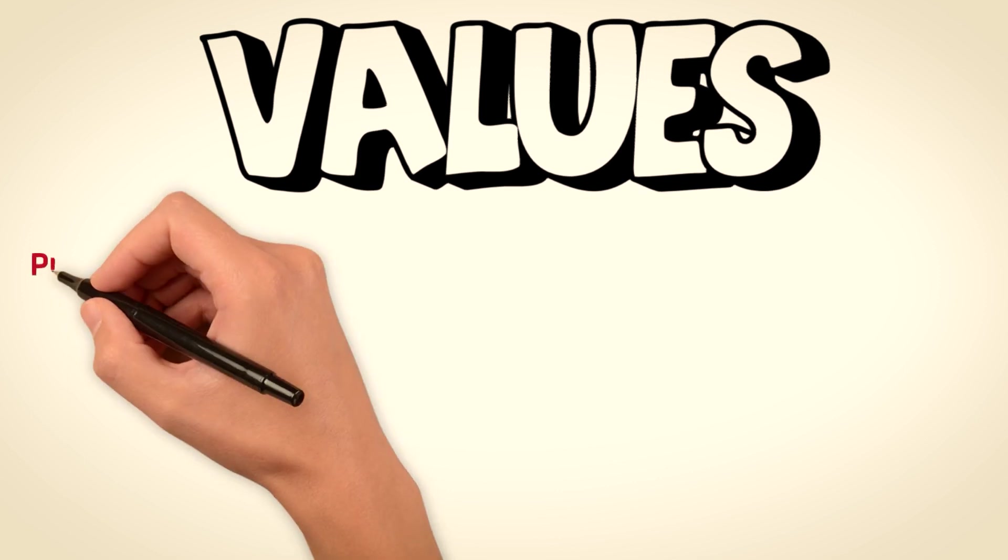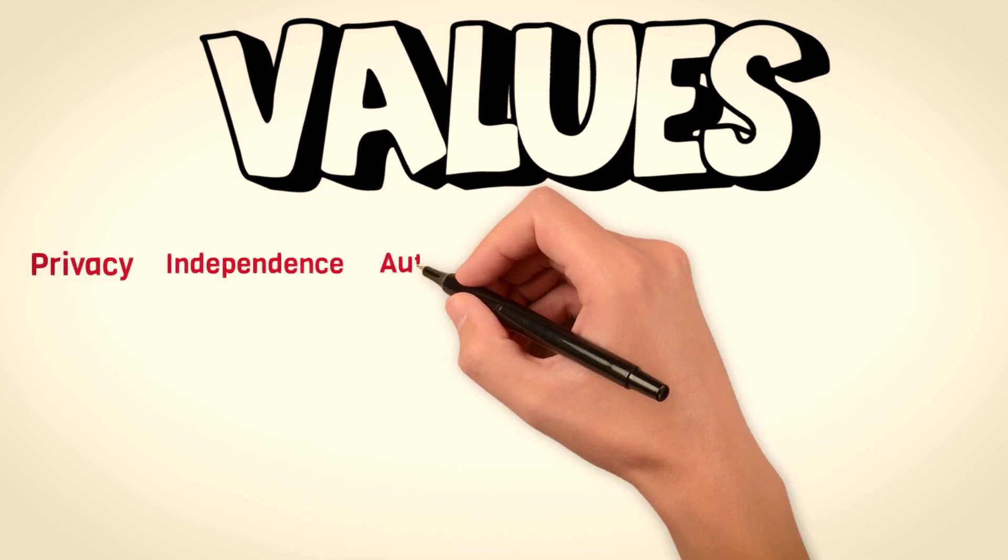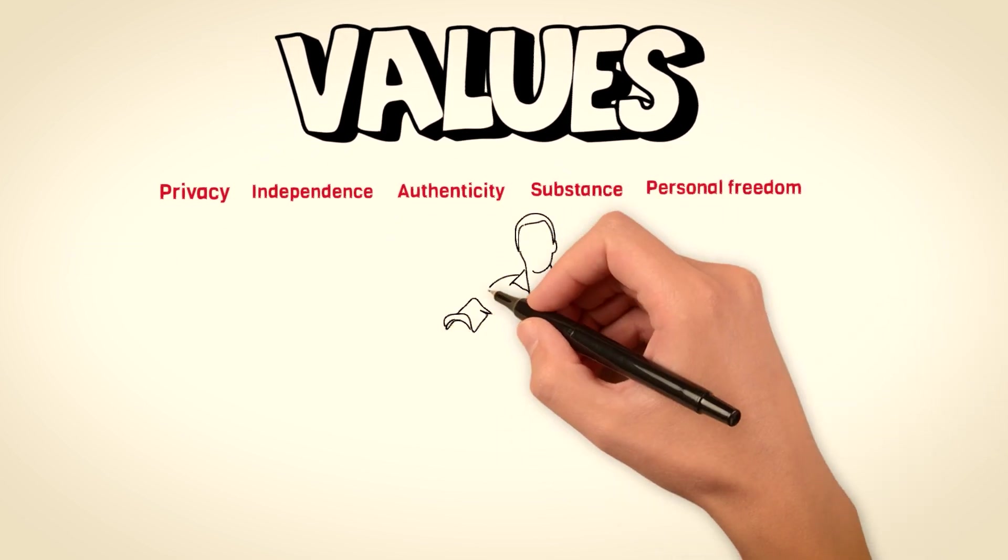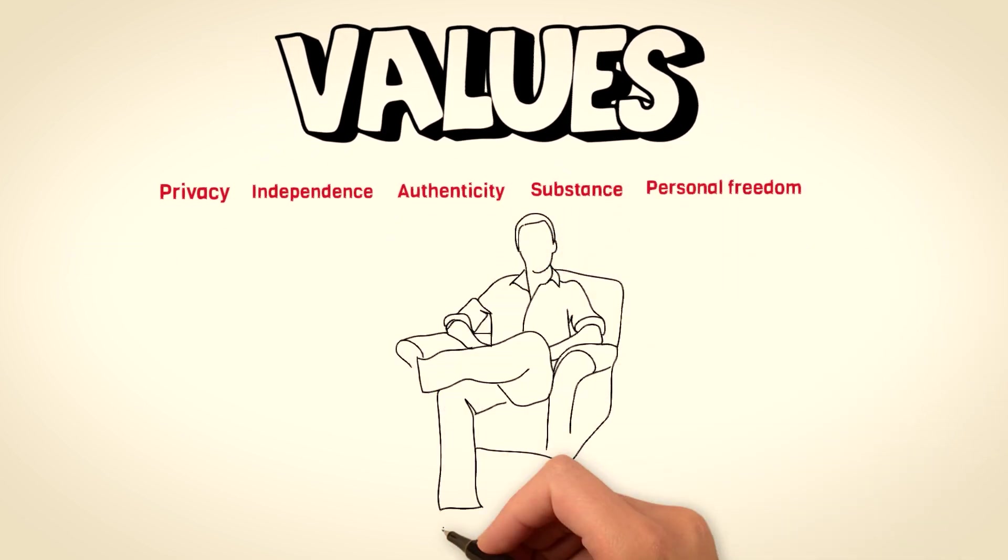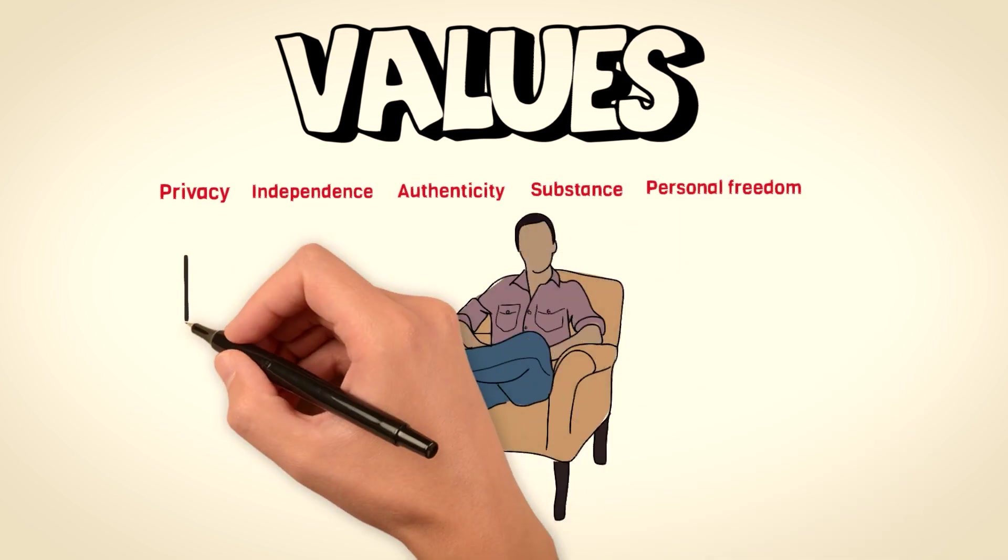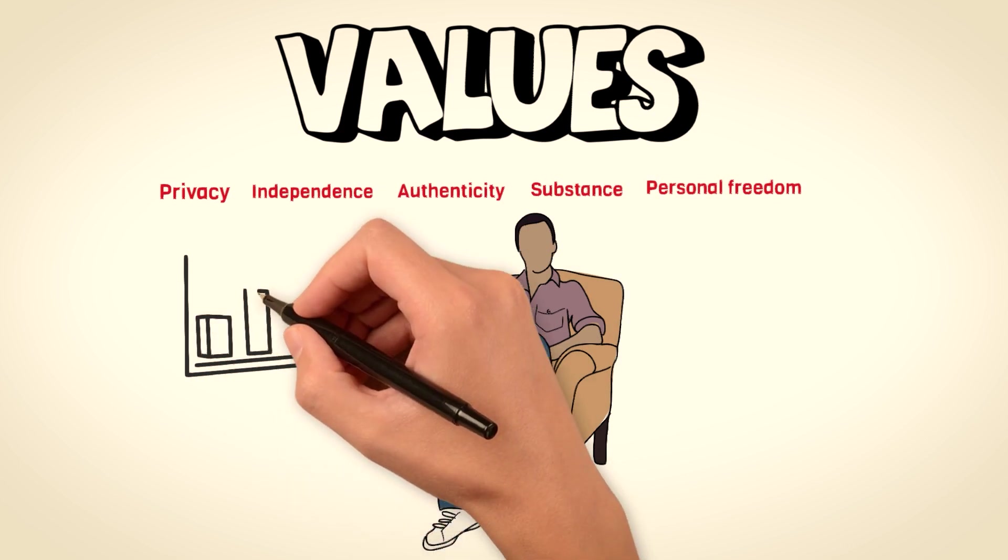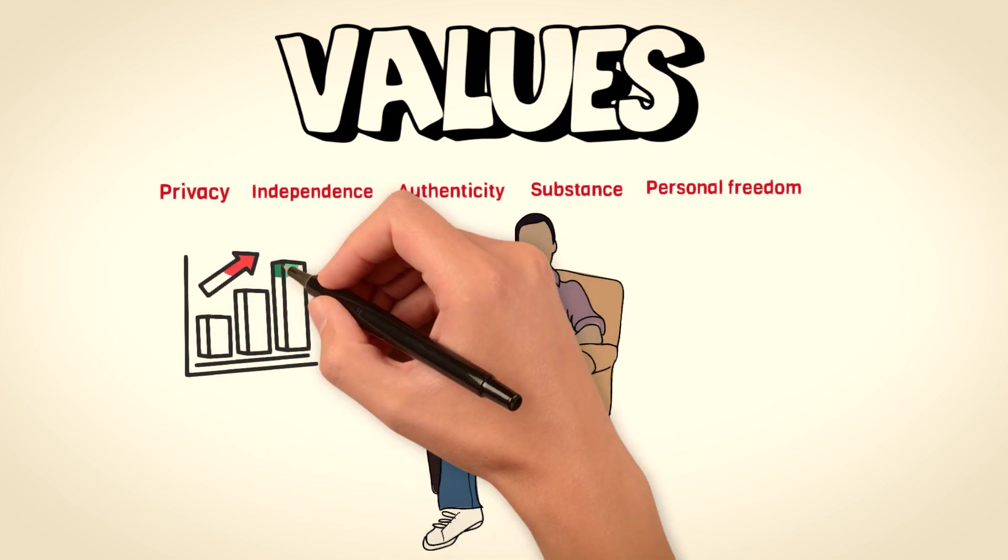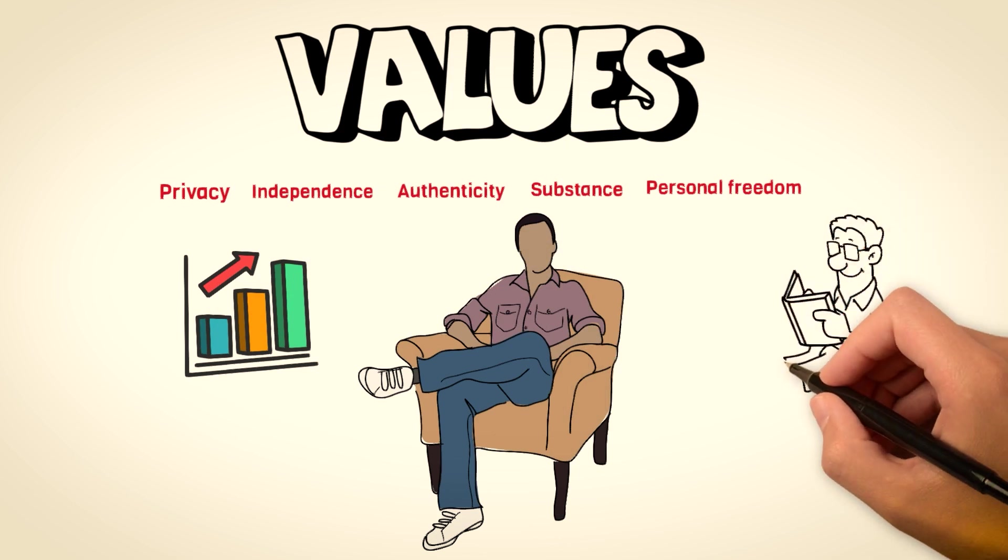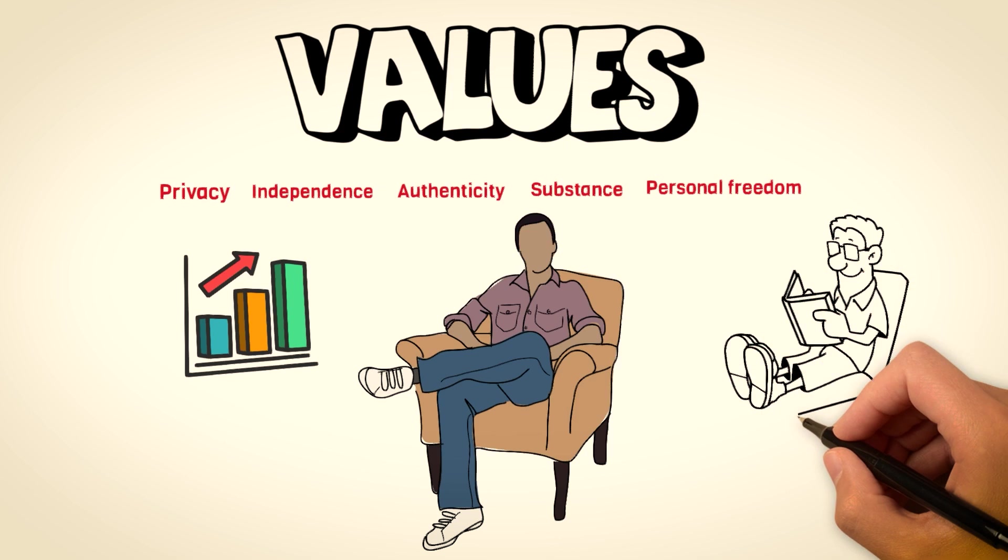Sigma males actively avoid attention and fame as it runs counter to their intrinsic values of privacy, independence, authenticity, substance, and personal freedom. They prefer to operate in the shadows, where they can live life on their terms and focus on personal growth and fulfillment without the burdens that come with being in the public eye. By prioritizing introspection, autonomy, and authenticity, sigma males find true contentment away from the spotlight and the attention that accompanies fame.